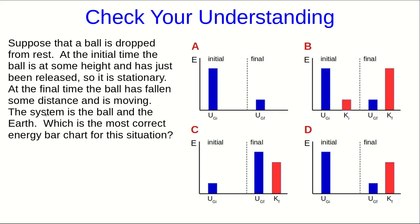Let's check your understanding of what I just did. So this is a situation almost exactly like the problem I just worked, except instead of the ball being thrown upward, this ball is being dropped from rest. So it's starting off at some height and it's just been released, so it's stationary at the start. And at the final time, it has gone some distance down.